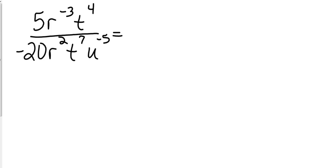5r to the negative 3, t to the 4th, over negative 20r squared, t to the 7th, u to the negative 5th. This is a jumbled mess. But knowing the rules, we can take care of this very easily. So let's look at the numbers. We've got a positive divided by a negative. So we know our answer is going to be negative. And what is 5 over 20? 5 over 20 reduces to 1/4th. So right now we've got negative 1/4th, and we're done with the numbers.